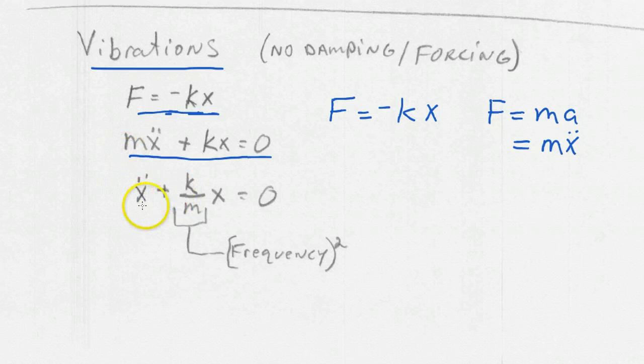Divide by the m, so we've got x'', the second derivative of x with respect to time, plus k/m times x equals zero. And we found that when we solve this, k/m is equal to the frequency squared. So whenever we write an equation that looks like this, the square of the natural frequency is whatever appears here in this equation.